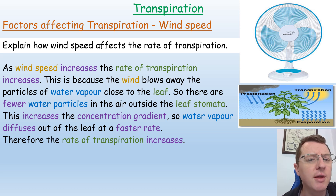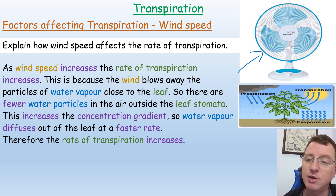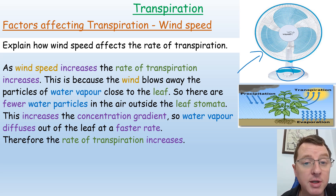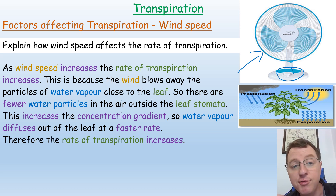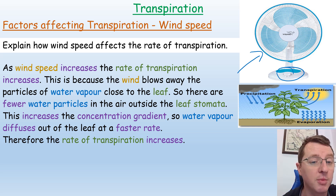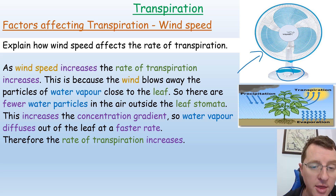What about wind speed? We could use the potometer with a fan, moving it closer or increasing its speed using a dial. As wind speed increases, the rate of transpiration increases. This is because wind blows away water particles close to the leaf, so there are fewer particles in the air outside the leaf's stomata, which increases the concentration gradient. Water vapor therefore diffuses out of the leaf at a faster rate, and the rate of transpiration increases.